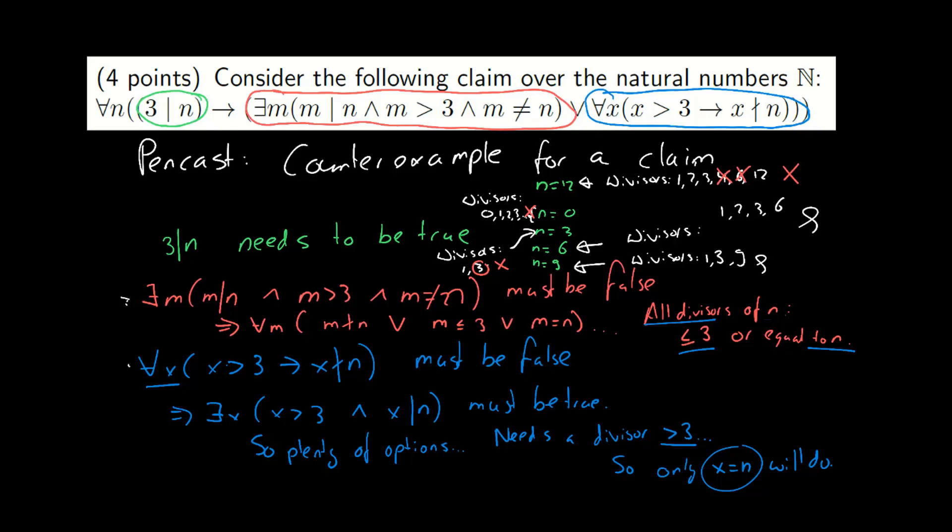So 6 and 9 are the only right answers to this question. You can pick either one and verify that indeed, for instance for 6, 3 divides 6, but all divisors of 6 are smaller than or equal to 3 or equal to 6, and yes, there is a divisor larger than 3, namely 6.